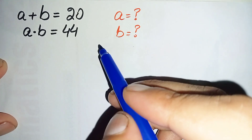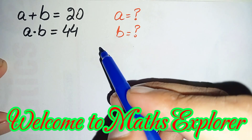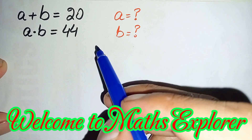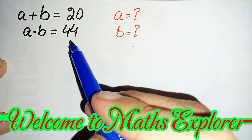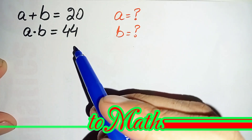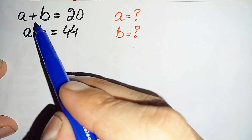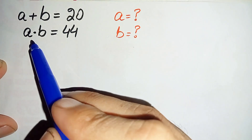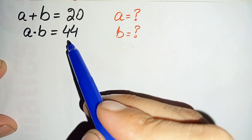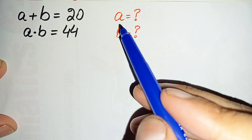Hello everyone, you are welcome to Math Explorer. In this video I'm going to solve this nice algebra math problem: a plus b is equal to 20 and a times b is equal to 44.